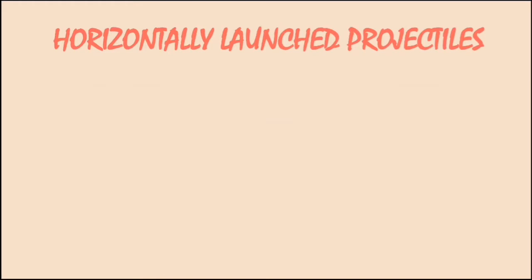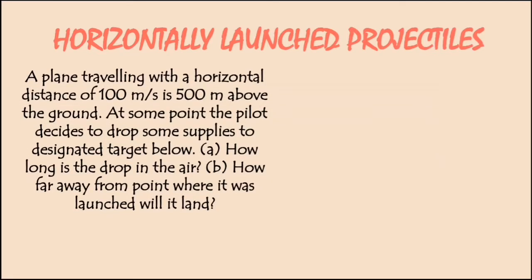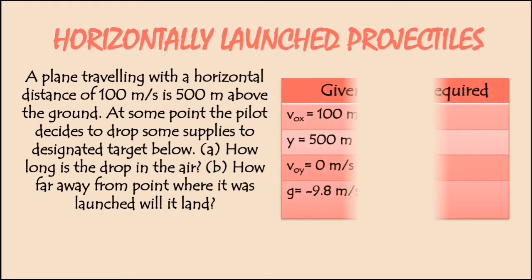Let's take a look at some example. A plane traveling with a horizontal distance of 100 meter per second is 500 meter above the ground. From this problem, we can have the velocity as 100 meter per second and 500 meter as distance. At some point, the pilot decides to drop some supplies to the designated target below. How long is the drop in the air? How far away from point where it was launched will it land?